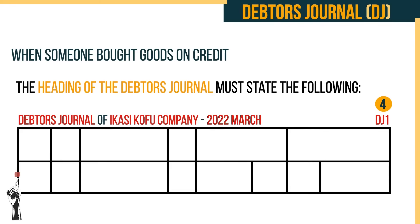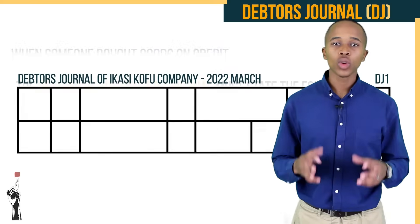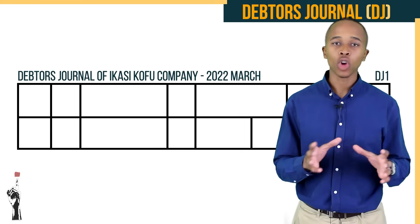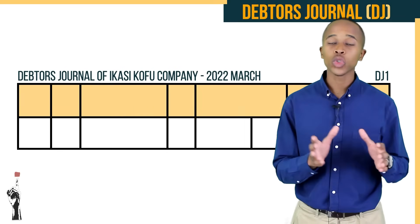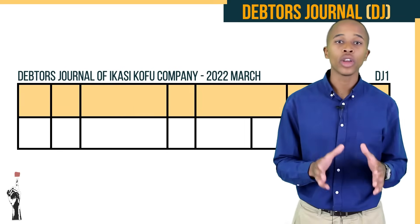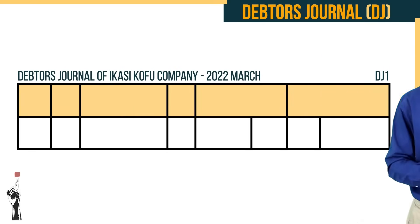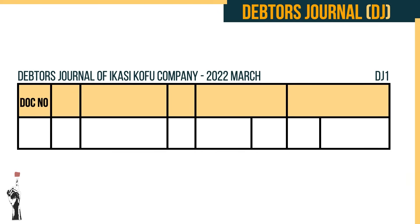The folio number for your first journal when starting a business will be DJ1, the next will be DJ2, and so on. Now let's look at the different columns — you will remember some of these from other source documents covered in previous lessons.